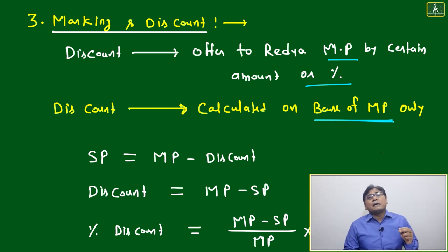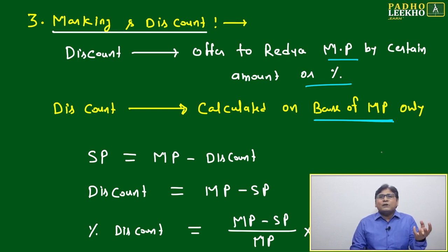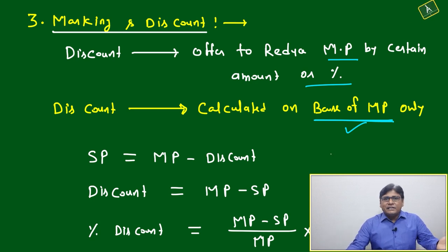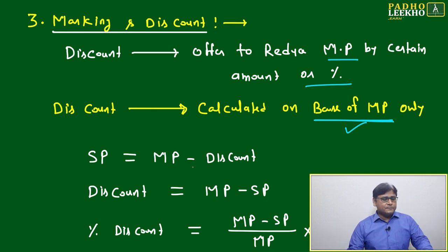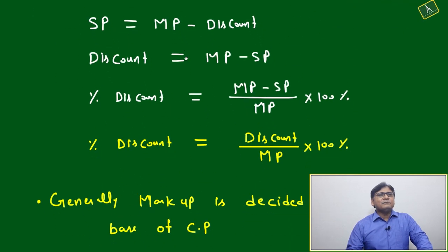Some terminology will be there, then only you take selling price as the base, otherwise cost price. Same way with discount, maybe one-time discount, successive discount, or complicated pattern of discount, whatever you are giving, always base will be marked price unless it is mentioned otherwise. If another base is mentioned, you have to take that number, otherwise marked price.